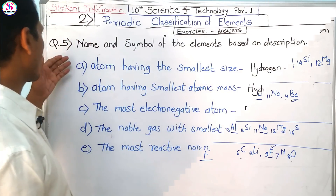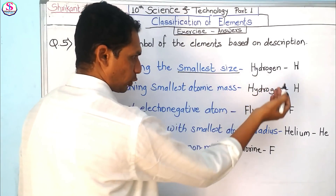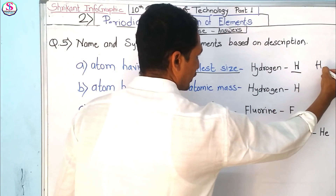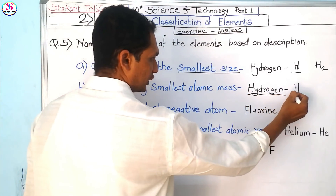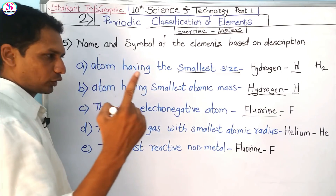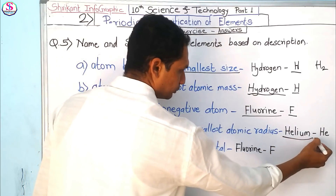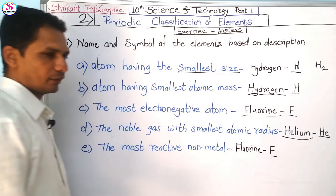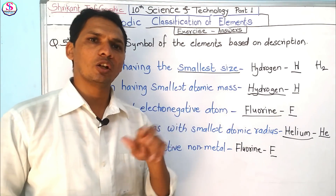Question 5 asks for the name and symbol of elements based on descriptions. The atom with the smallest size is hydrogen (H, or H₂ in molecular form). The atom with smallest atomic mass is also hydrogen. The most electronegative atom is fluorine. The noble gas with the smallest atomic radius is helium (He). The most reactive non-metal is fluorine, because it has 7 electrons in its outermost orbit.